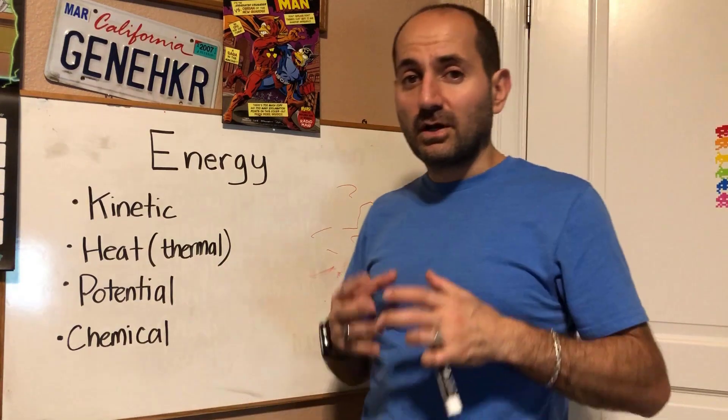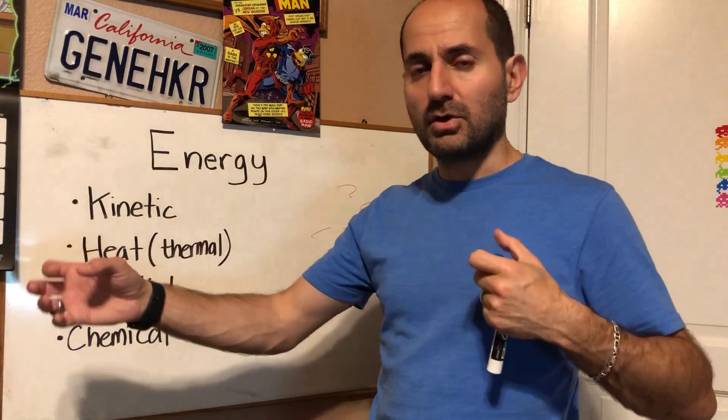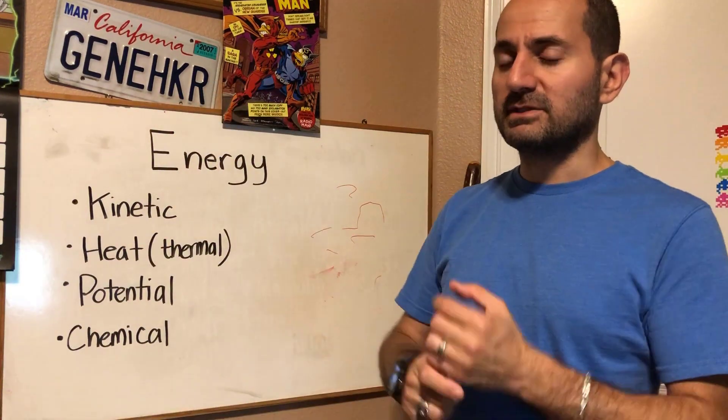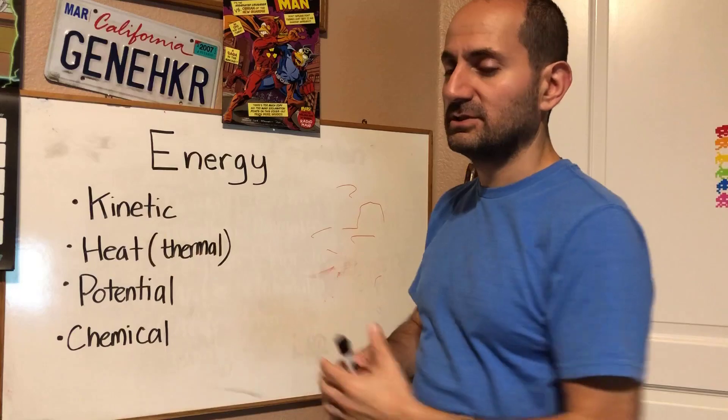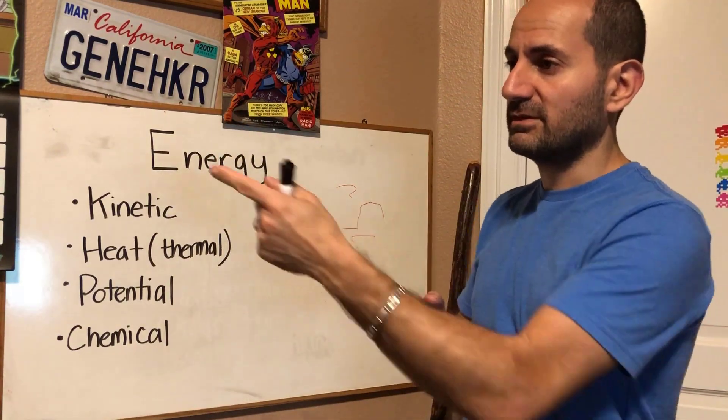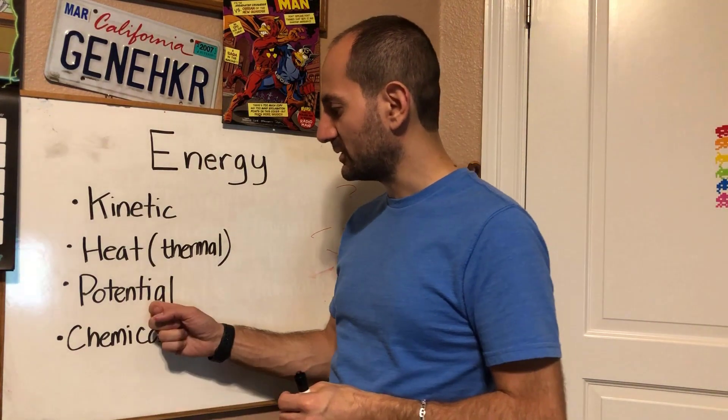That would be an example of a lot of potential energy based on the structure of that bow at the moment. It's all ready to let go, and when you let go, that potential energy allows the arrow to fly off and convert to kinetic energy and fly across the room toward the target. That's potential energy.